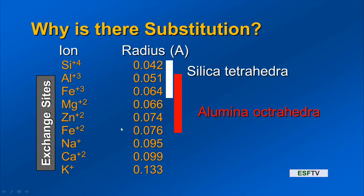Why does substitution occur? It has to do with ionic radius size. In the silica tetrahedra, aluminum will substitute for silicon because it's just about the right size — iron will even substitute sometimes. These substitutions are observed through X-ray diffraction. Aluminum is sometimes found holding a place where silica would be in a silica tetrahedron, leaving a net negative charge. In the aluminum octahedron, the most common substitution is magnesium²⁺ — similar-sized atoms with atomic radii that fit in the spaces, leaving a net negative charge. Larger ions like exchangeable cations are too large to fit into those spaces.